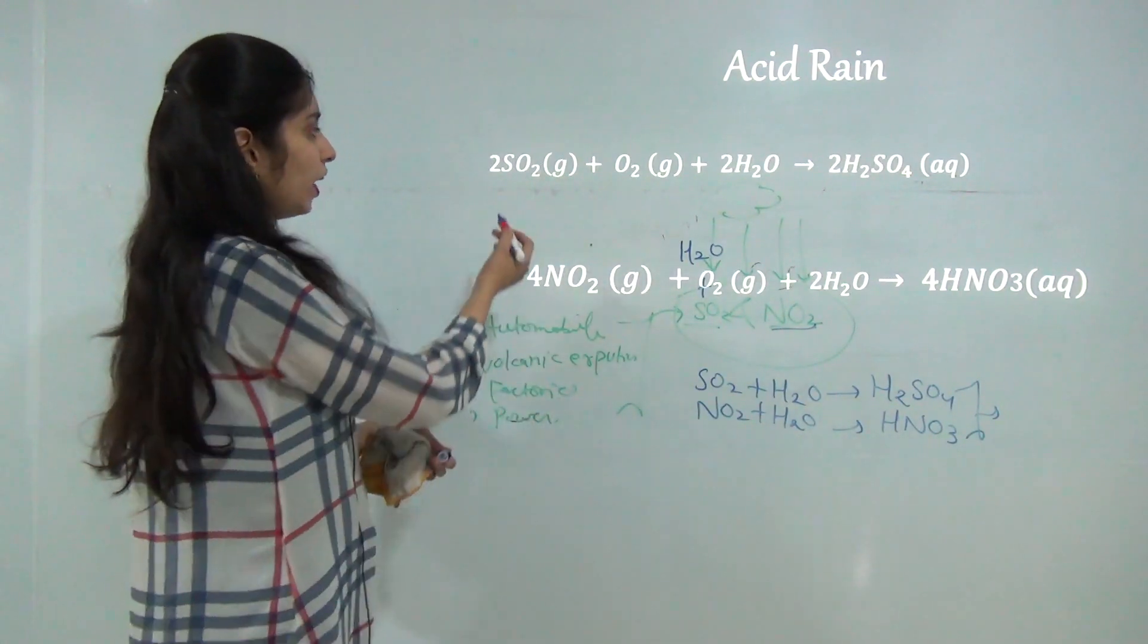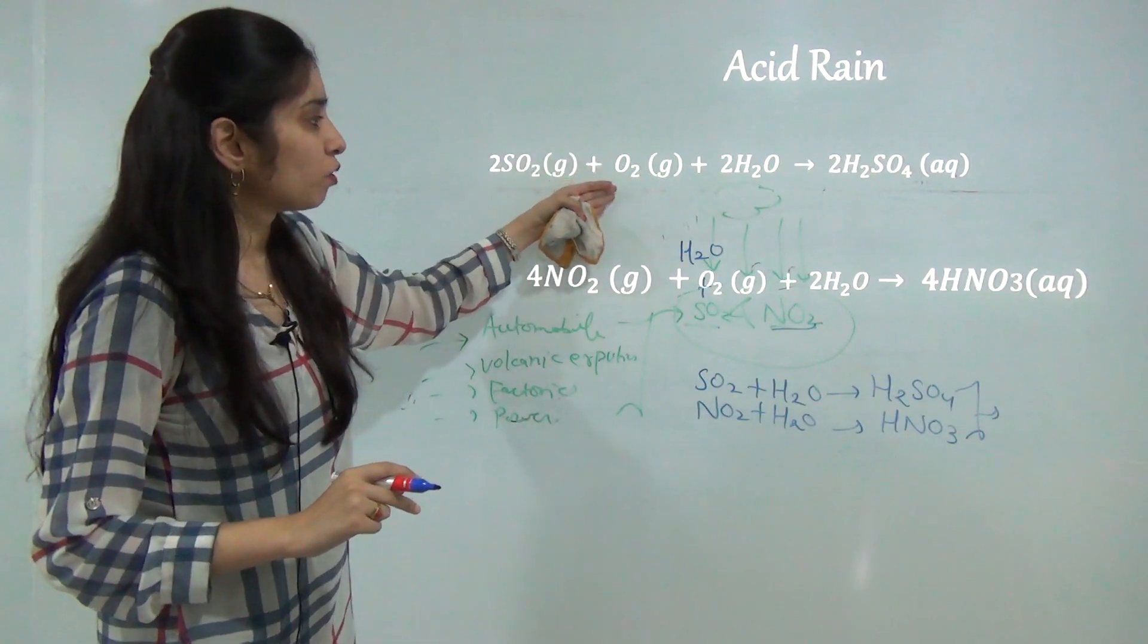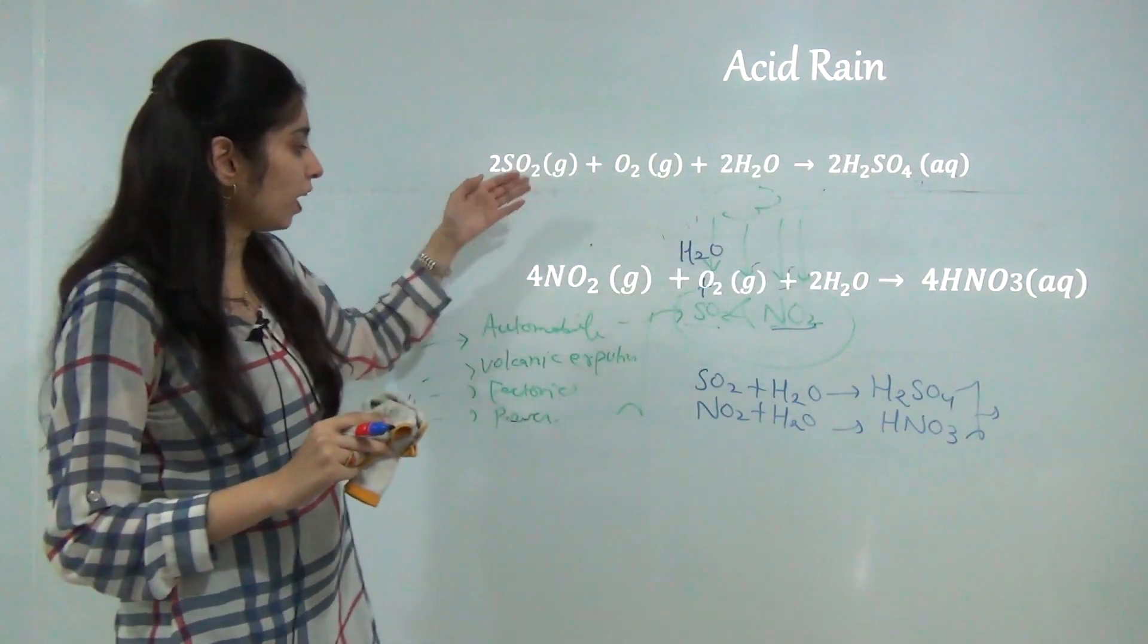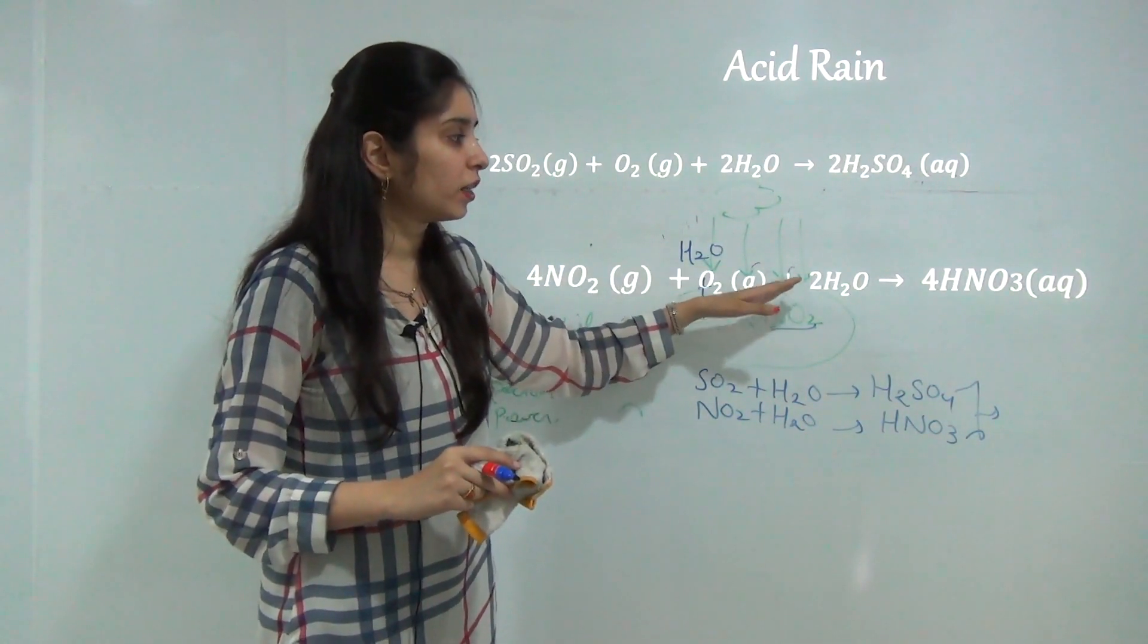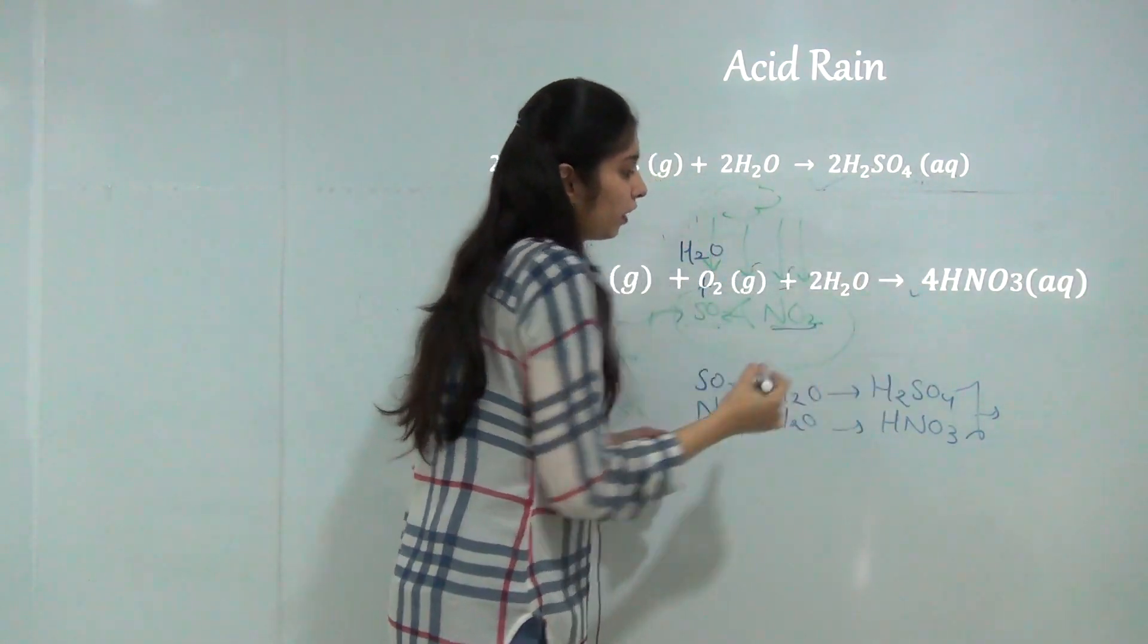The reaction is as follows: 2SO2 gaseous form plus O2 plus 2H2O makes H2SO4 sulfuric acid, and on the other hand 4NO2 plus O2 plus 2H2O gives nitric acid which contributes to acid rain.